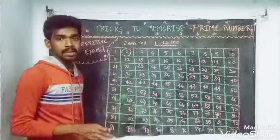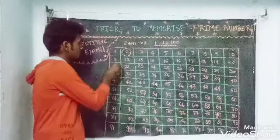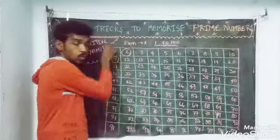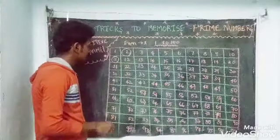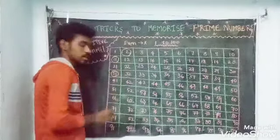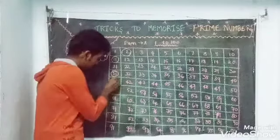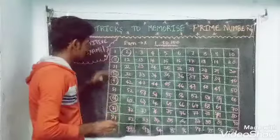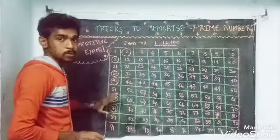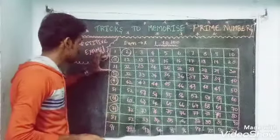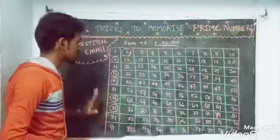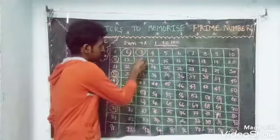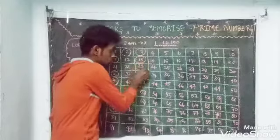So the first set of prime numbers: 11, 31, 41, 61, 71 — these are prime numbers up to 100. Also in another group: 3, 13, 23.